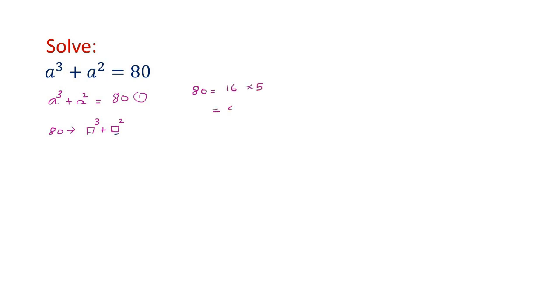16 times 5. 16 is 4², 5 can be written as 4 plus 1. Then when you expand this, you will get 4³ + 4². As we wanted it, you are getting it. So you can express 80 like this. The given equation is a³ + a² = 4³ + 4².